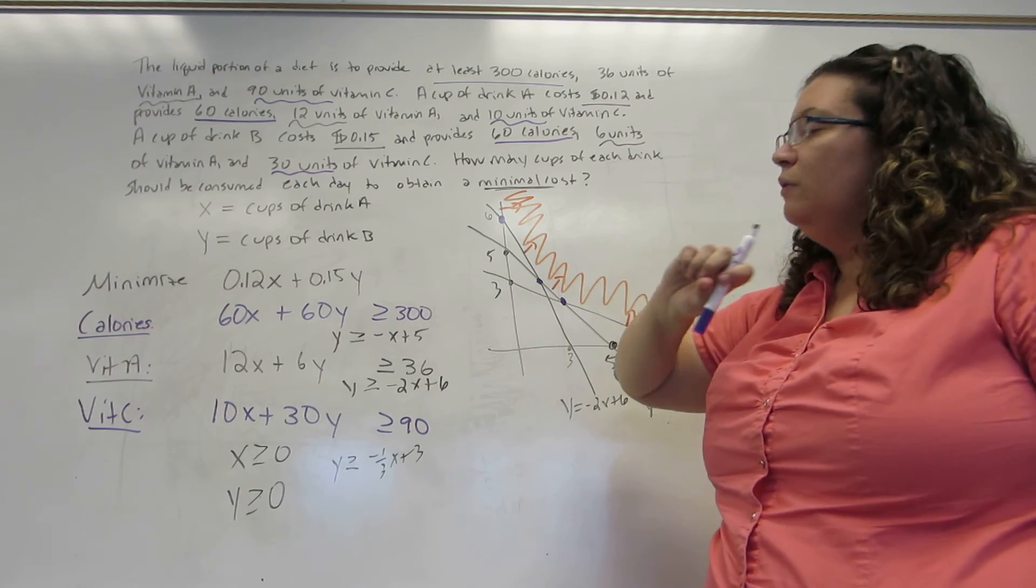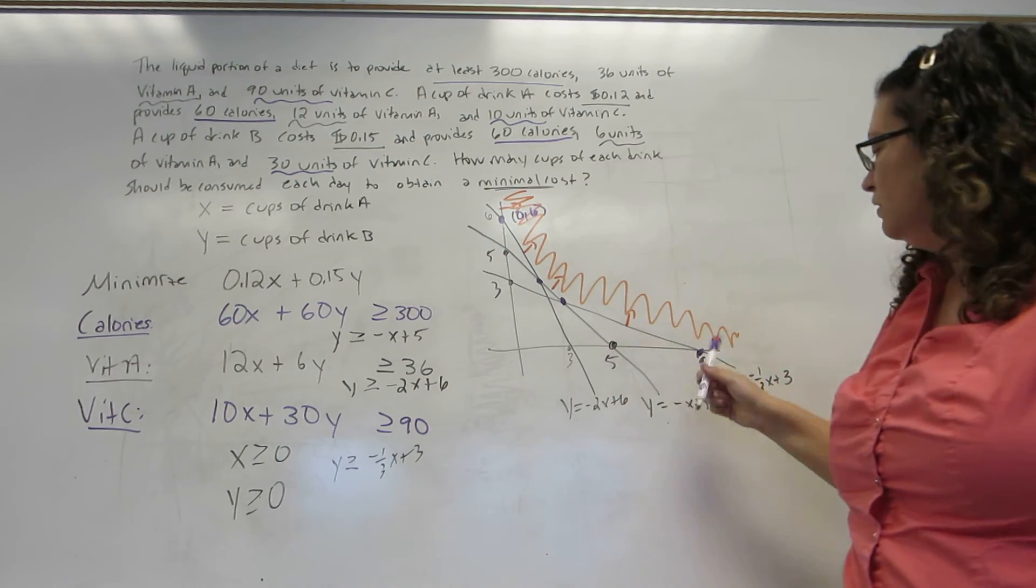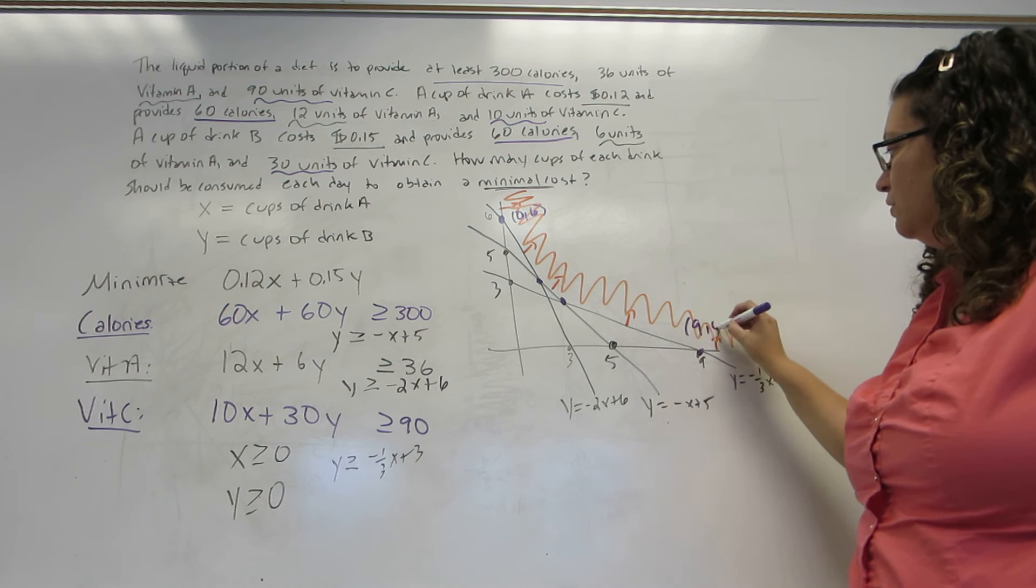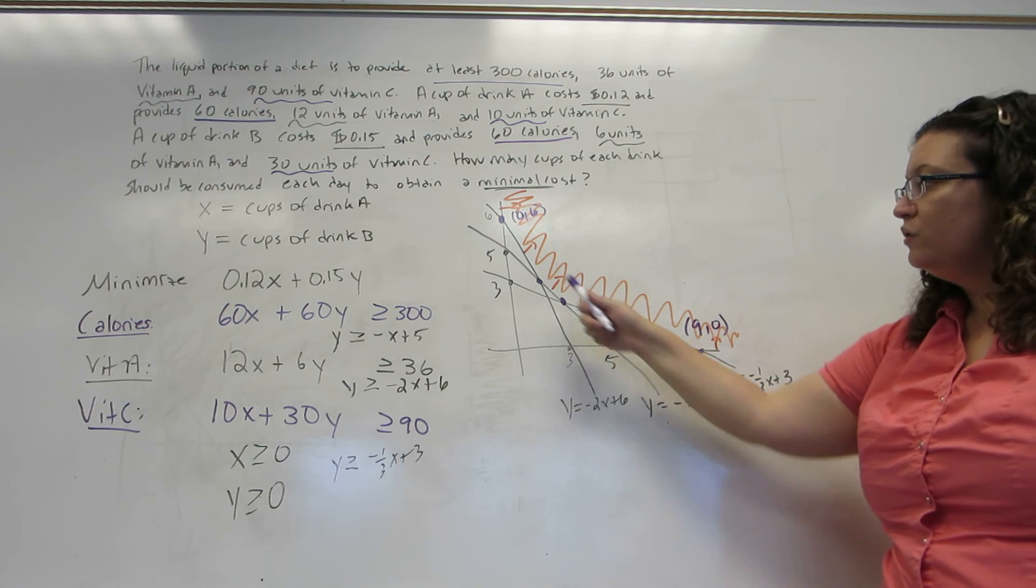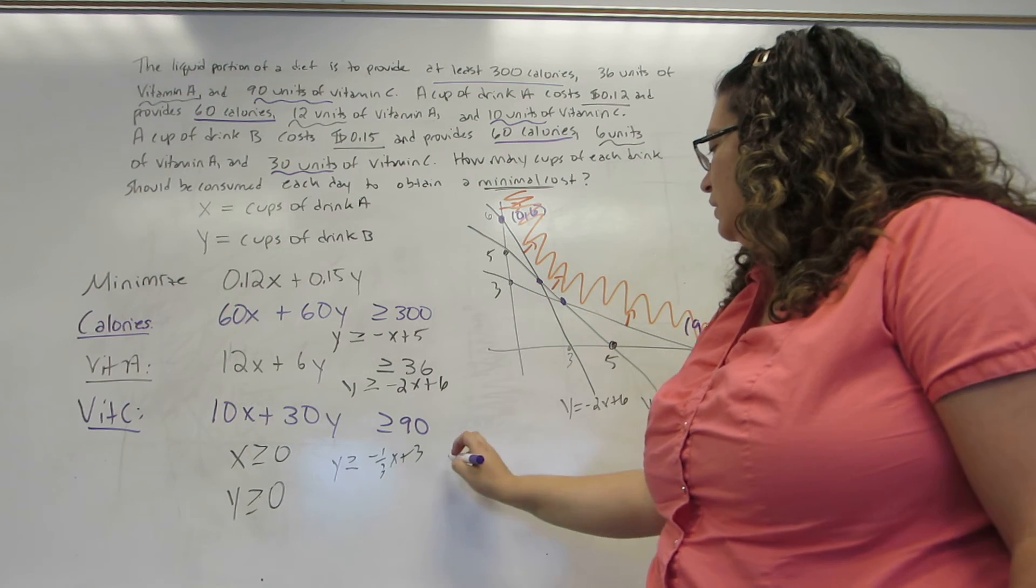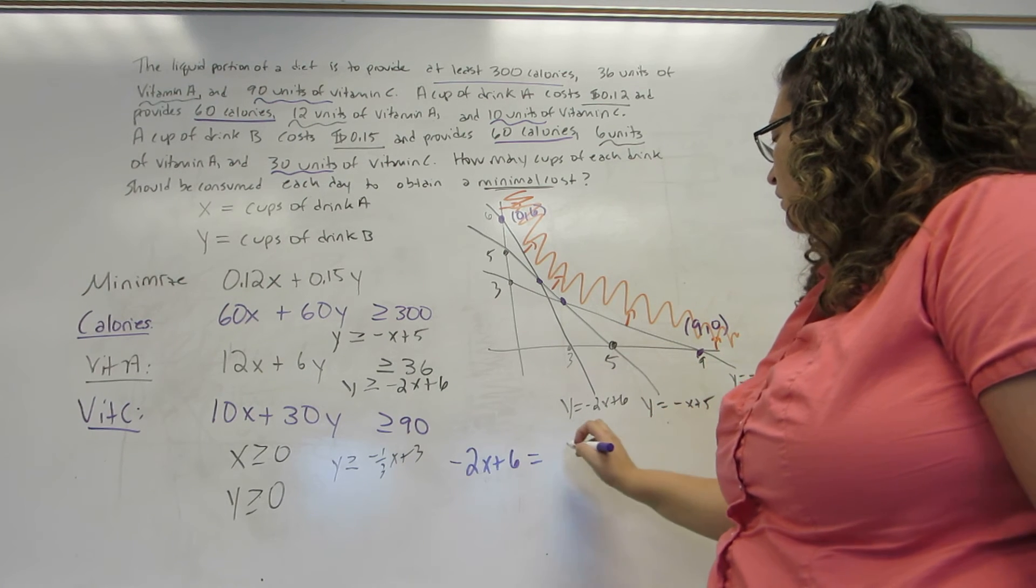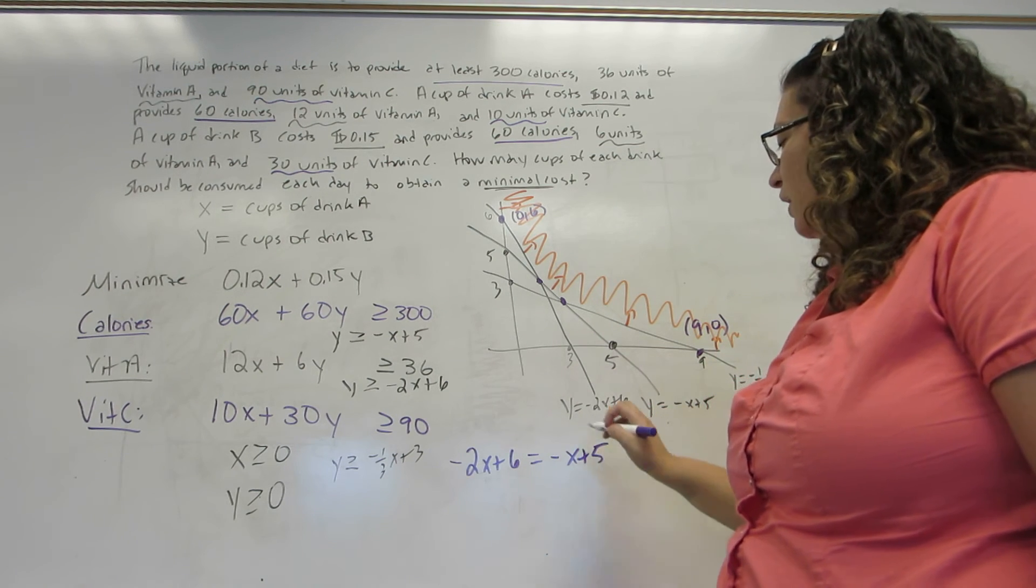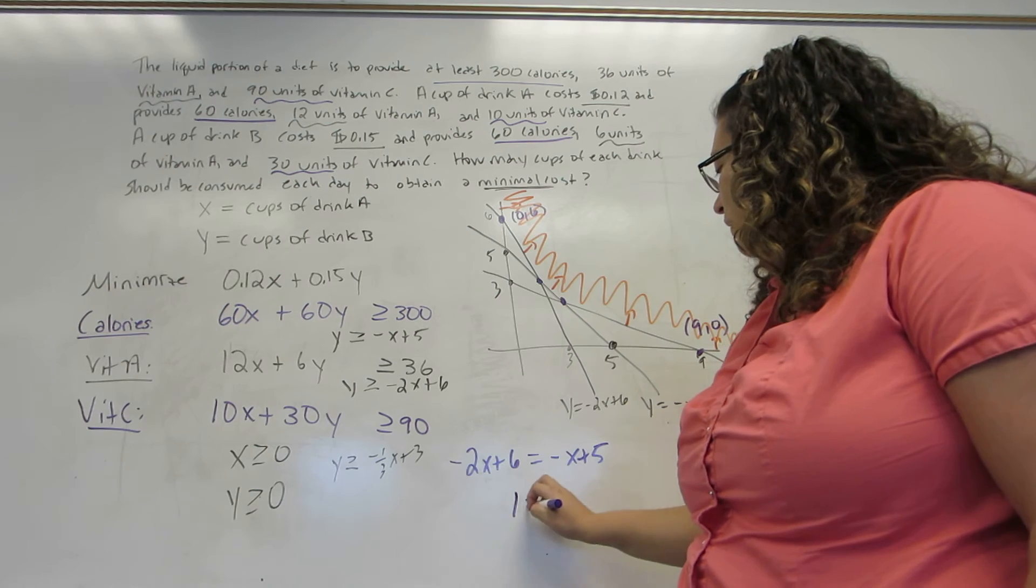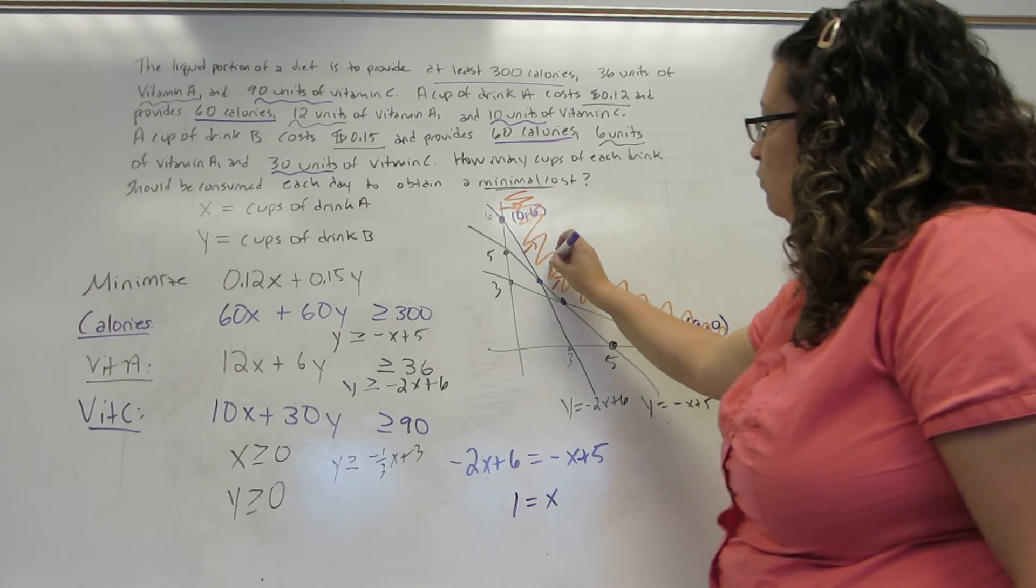This one was a Y-intercept. We already know its coordinates are (0, 6). This one was an X-intercept. We already know its coordinates are (9, 0). So I'm looking for the coordinates of the two middle corner points. For this first one, it's where minus 2X plus 6 intersects the line minus X plus 5. So I get that X equals 1, and if X is 1, Y is 4.